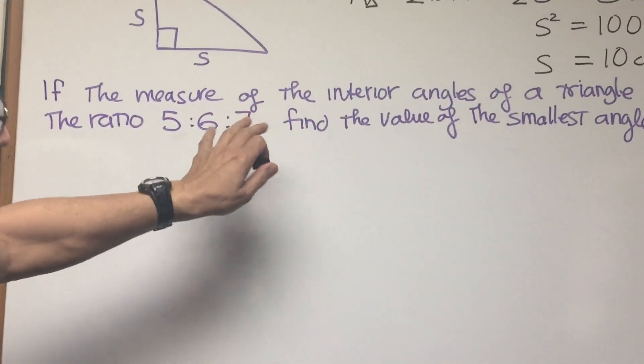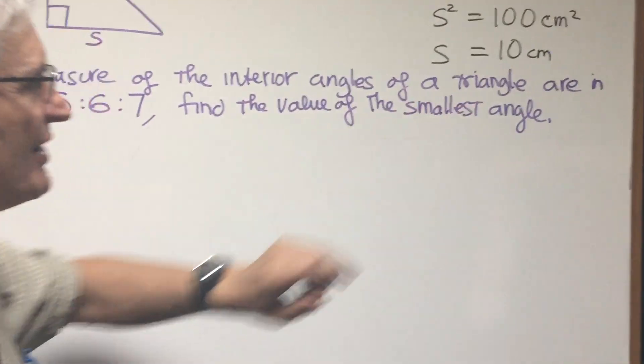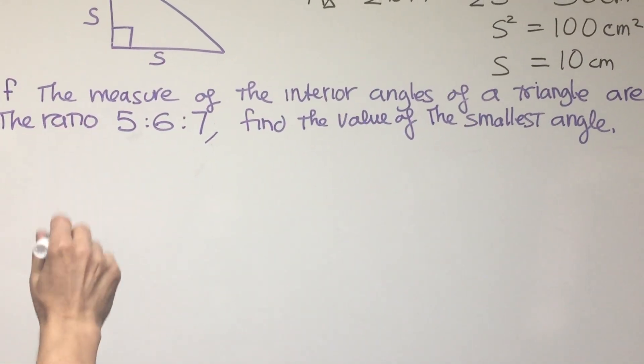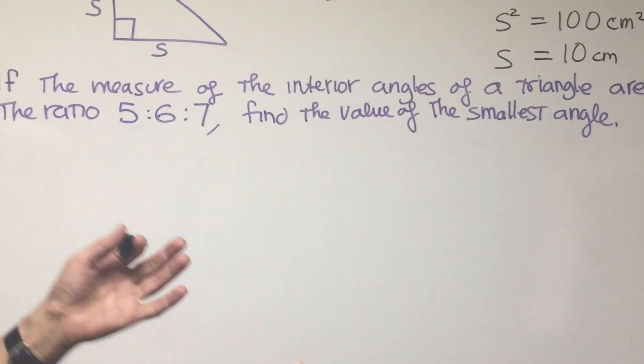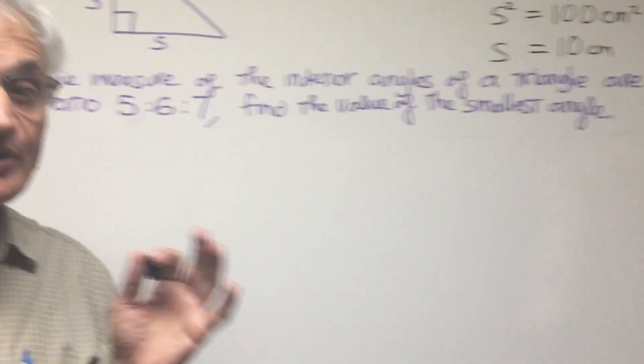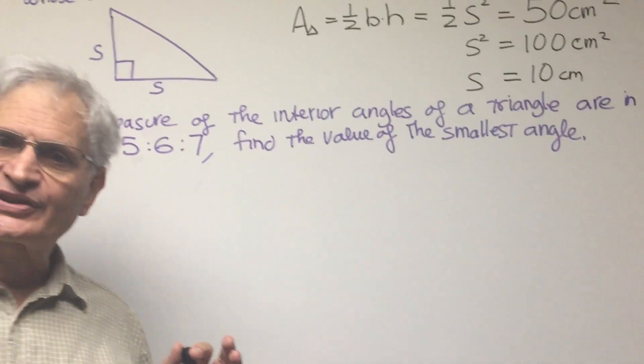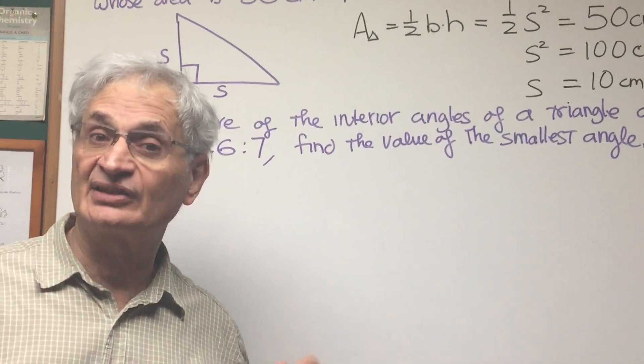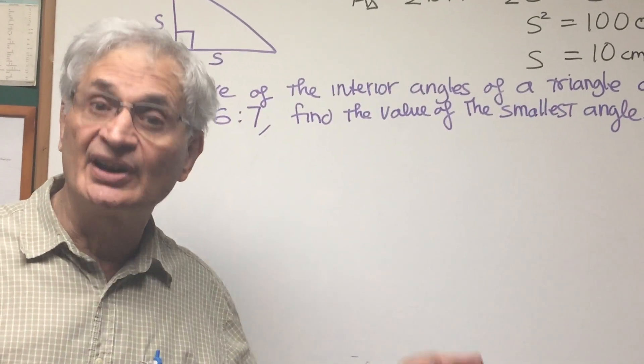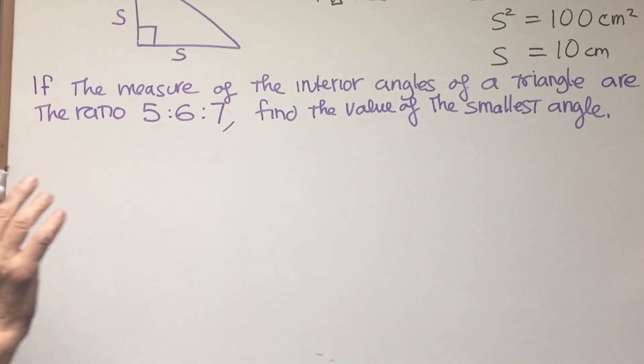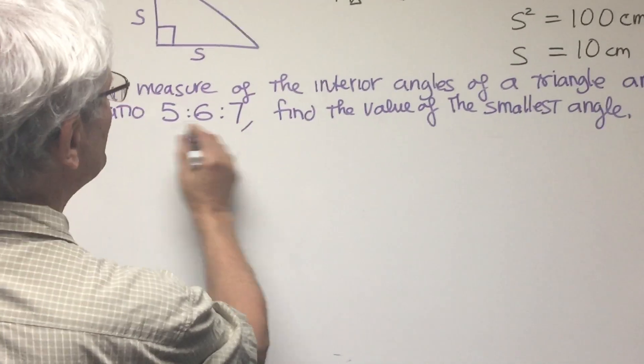The measure of the interior angles of a triangle are in the ratio 5:6:7. Find the value of the smallest angle. Now in order to do this, we should be armed with the information that the sum of the internal angles of a triangle is 180 degrees. Okay, that is something that you must know. So we have 180 degrees.